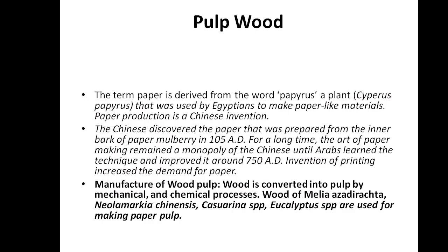Pulp wood is used to make paper. The first plant used for paper was papyrus in Egypt. Paper was invented in China around 105 AD. Before that, crystal and other materials were used. Wood pulp is converted into pulp by mechanical and chemical processes, and then made into paper.